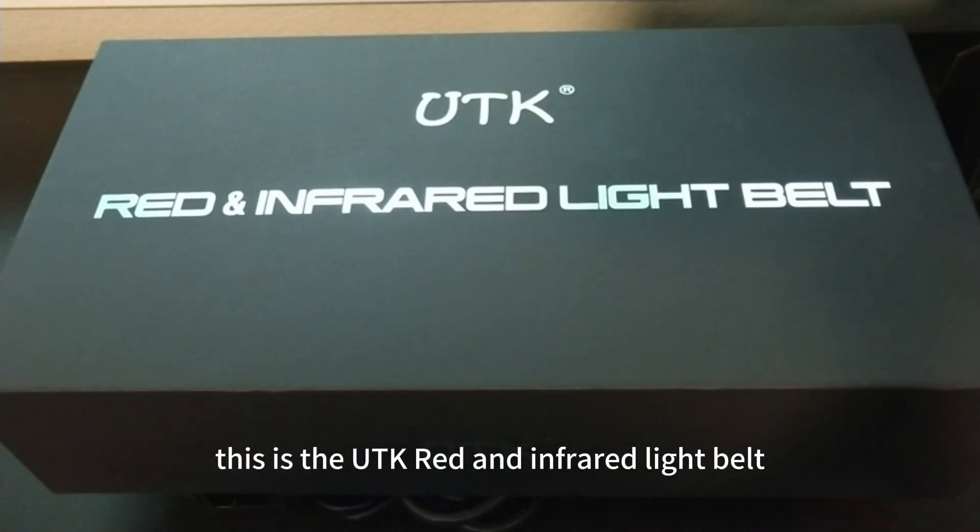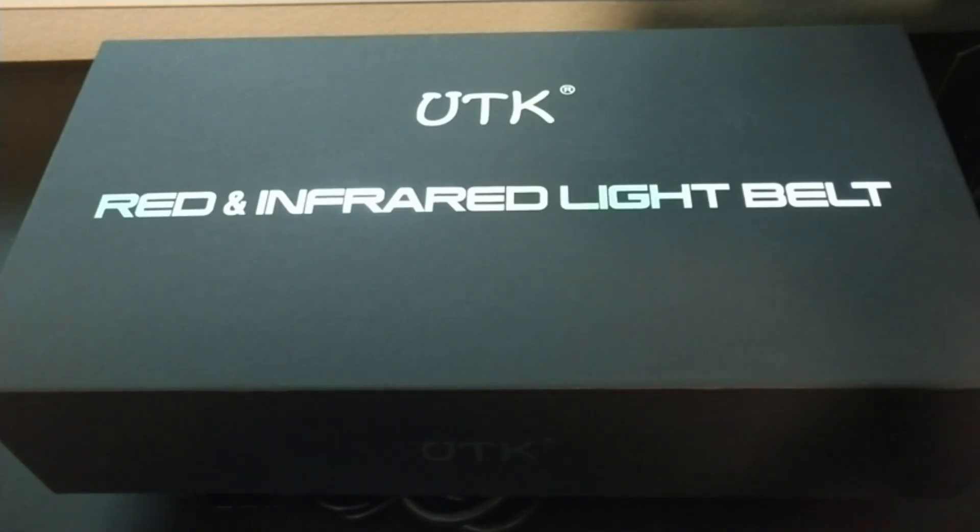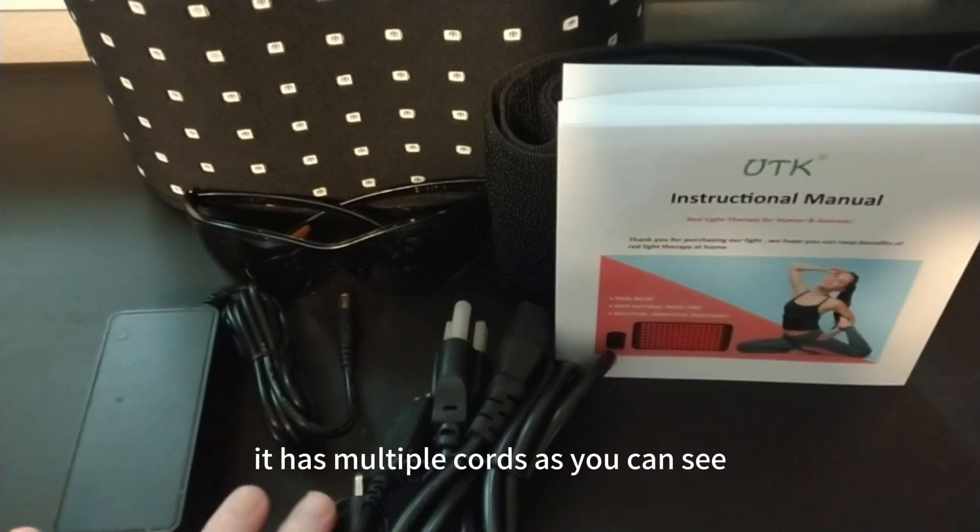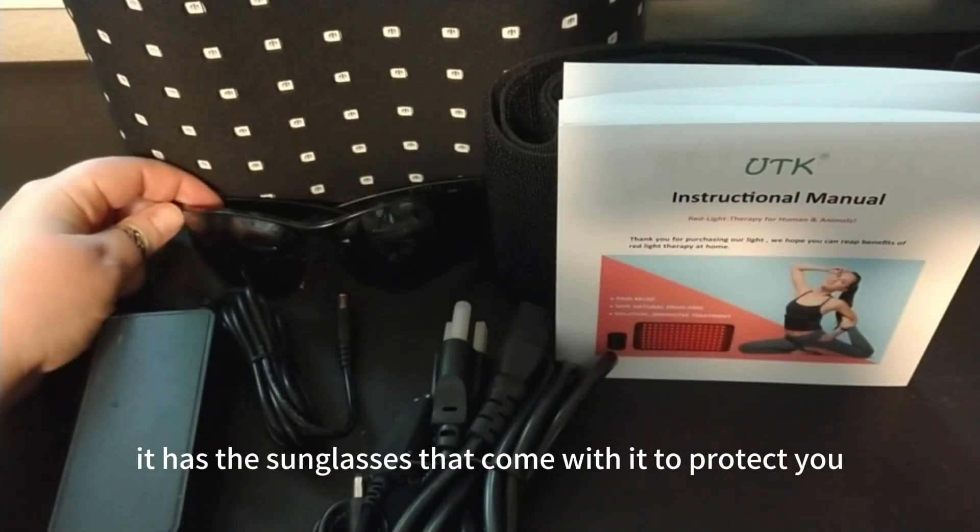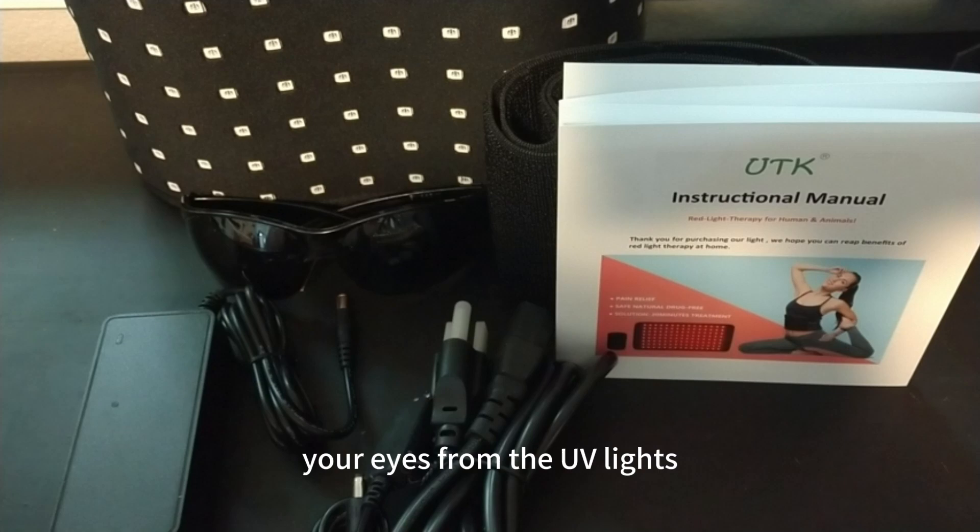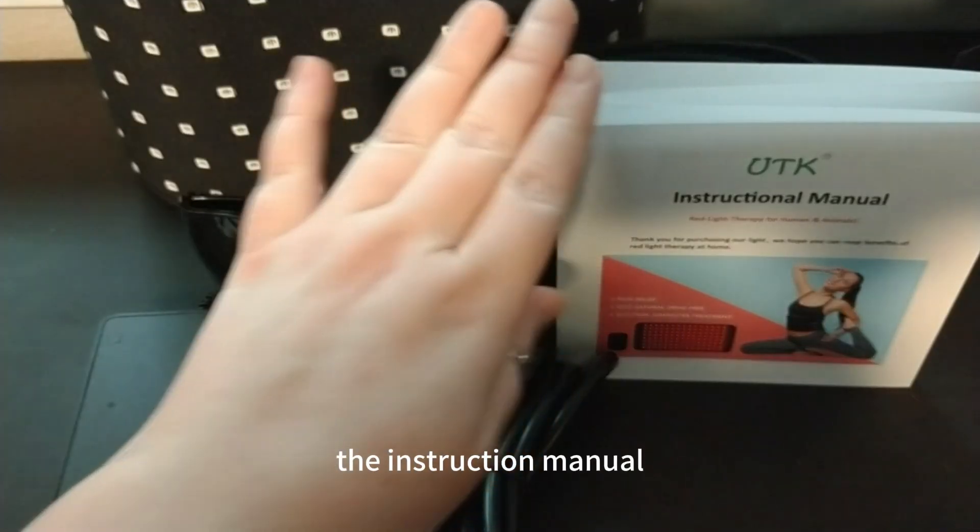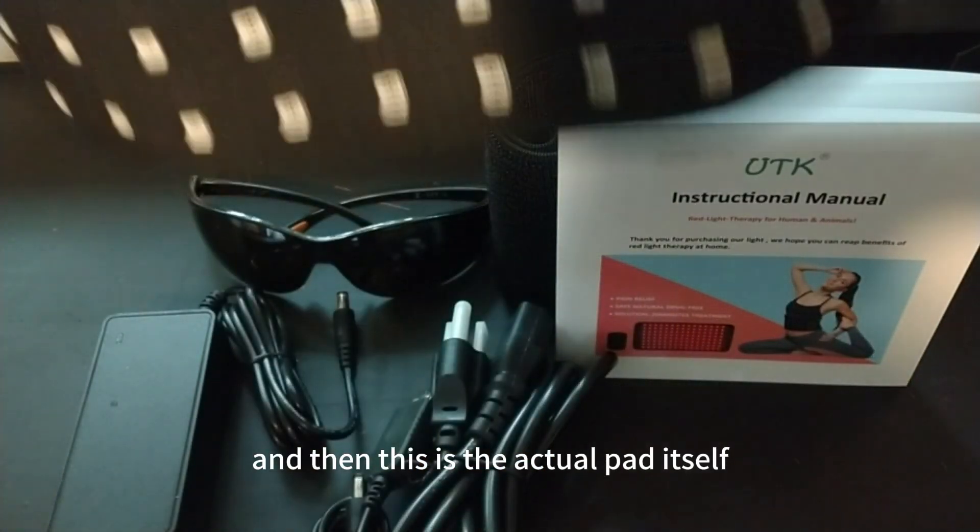This is the UTK Red and Infrared light belt. It has multiple cords as you can see. It has sunglasses that come with it to protect your eyes from the UV lights, the instruction manual, and then this is the actual pad itself.